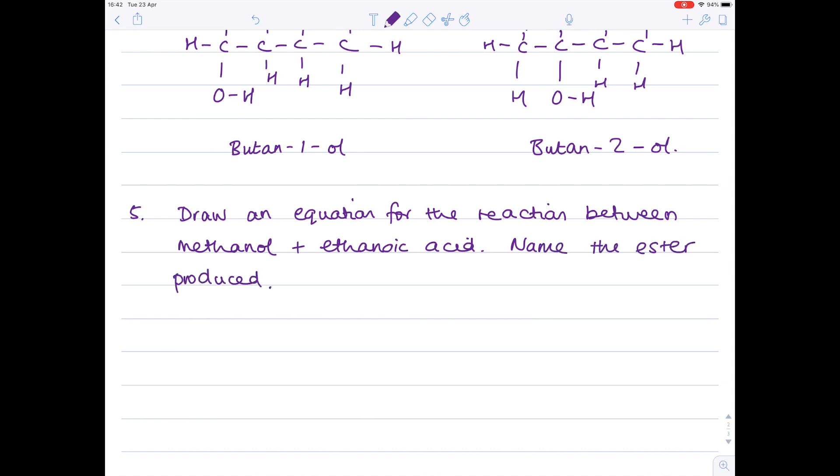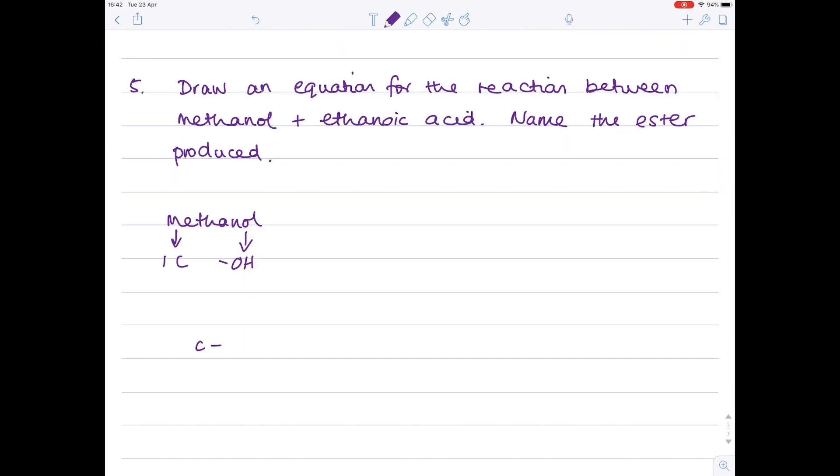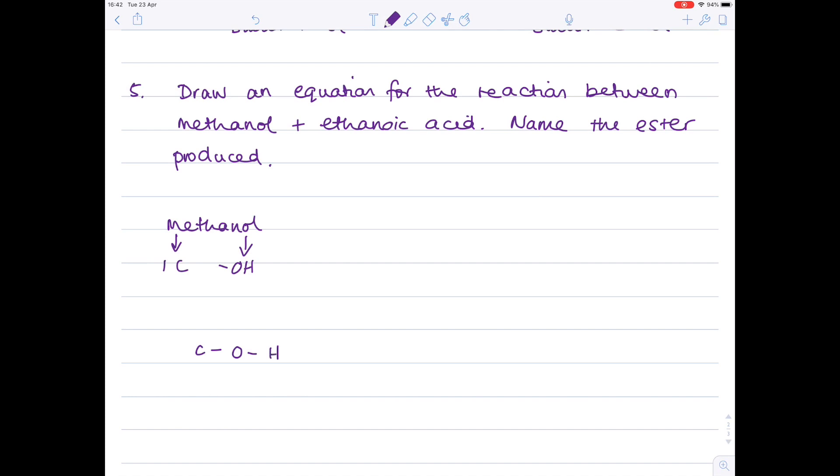So looking first at methanol. Meth meaning that it contains one carbon. Ol meaning that it contains an OH functional group. So that's quite straightforward. It will look like this. So there's methanol.